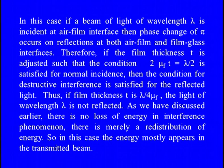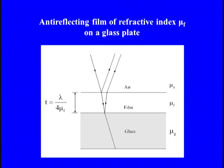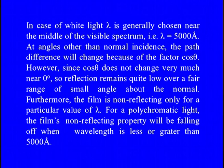As we have discussed earlier, there is no loss of energy in interference phenomena; therefore, there is merely a redistribution of energy. So in this case, the energy mostly appears in the transmitted beam. In the case of white light, λ is generally chosen near the middle of the visible spectrum, that is λ around 5000 Angstroms. At angles other than normal incidence, the path difference will change because of the factor cosine θ.